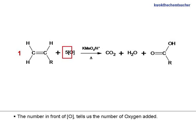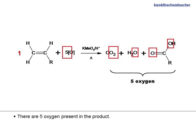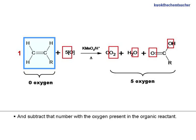The number in front of the bracket O tells us the number of oxygen added. We can tell by checking the oxygen in the products. There are 5 oxygen present in the product, and we subtract that number with the oxygen present in the organic reactant. Thus, this gives us that 5 oxygen was added to the reactant.